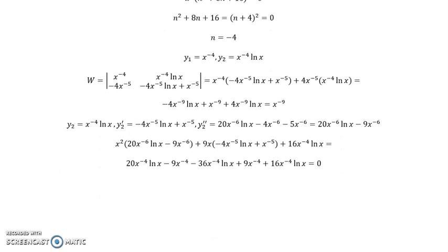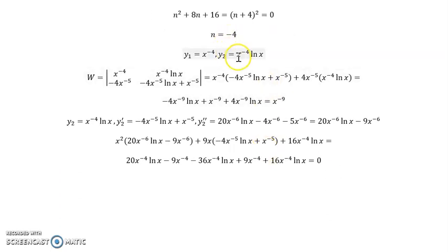Now what we want to do then is we just want to verify that in fact this trick that we used does in fact give us a second solution that will satisfy the equation. So what I've done is I've taken the derivative of my y2 equation and we got that from our Wronskian, and of course we did that up here. And then I took the derivative a second time, y2 double prime.